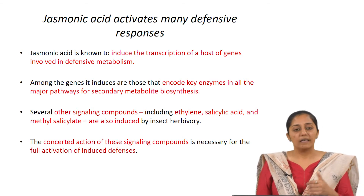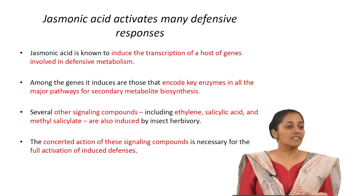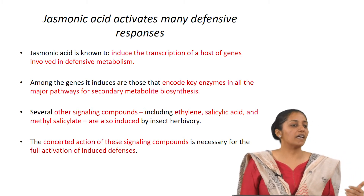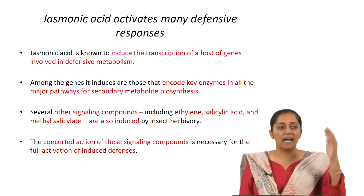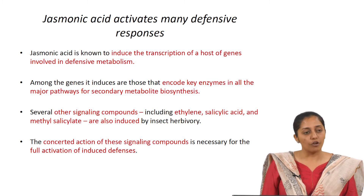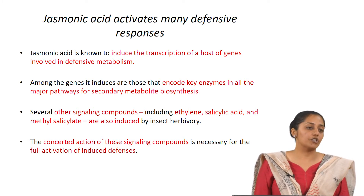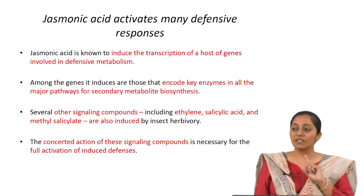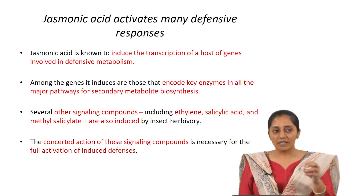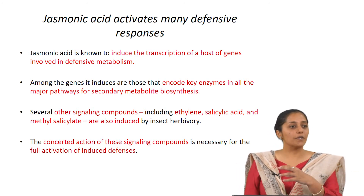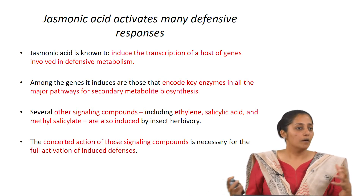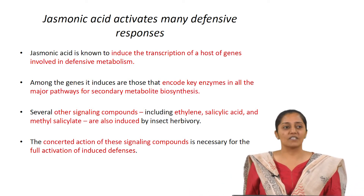Several other signaling compounds include ethylene — both a plant hormone and a signaling molecule — salicylic acid, and methyl salicylate. Methylated components can become volatile, acting as volatile signals to other parts of the plant or neighboring plants. The concerted action of these signaling compounds is necessary for the full activation of induced defenses; it is not just one compound at a time but a cascade where everything is produced together, inducing a different line of defense.